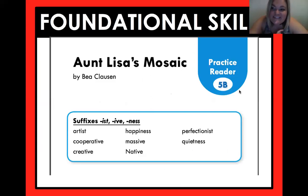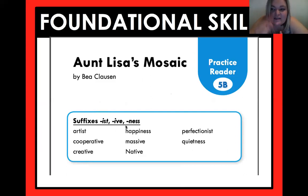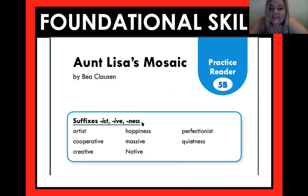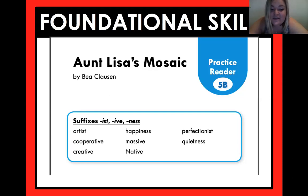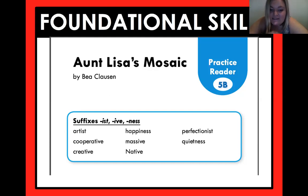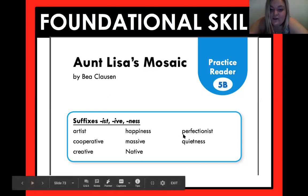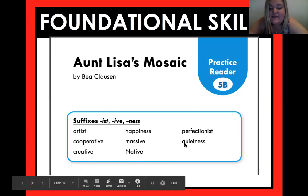For our foundational skill today, we are still working with the same suffixes that come at the end of the word: -ist, -ive, and -ness. You're going to go and read Aunt Lisa's Mosaic, then tape yourself recording it and see how you do. Make sure you focus on words like artist, cooperative, creative, happiness, massive, native, perfectionist, and quietness.